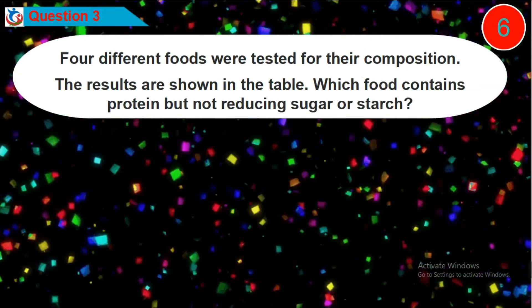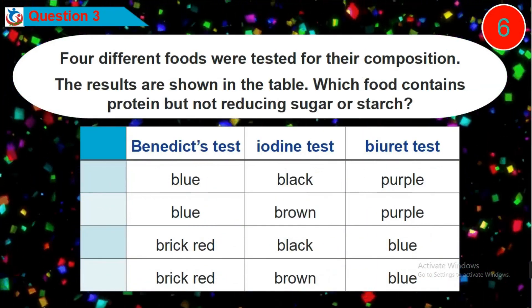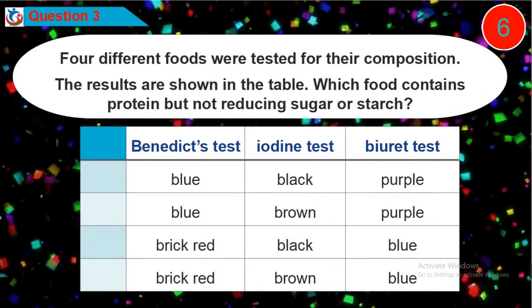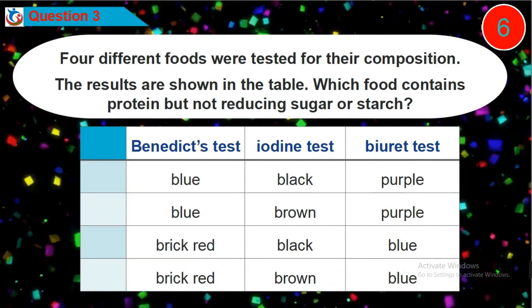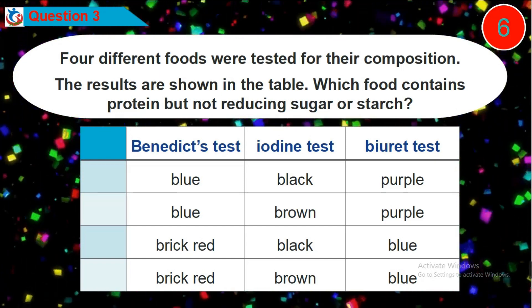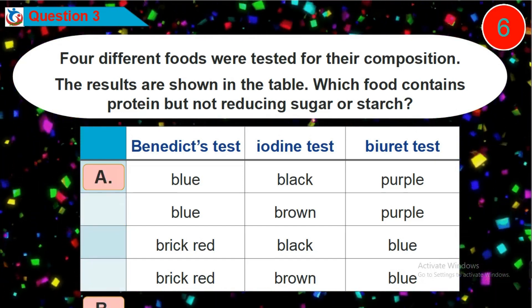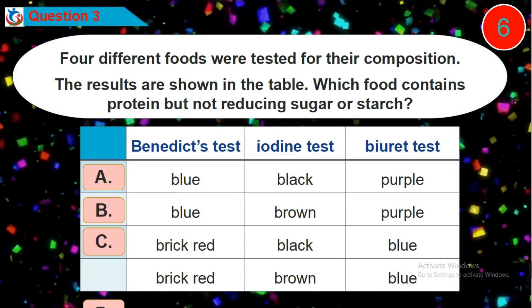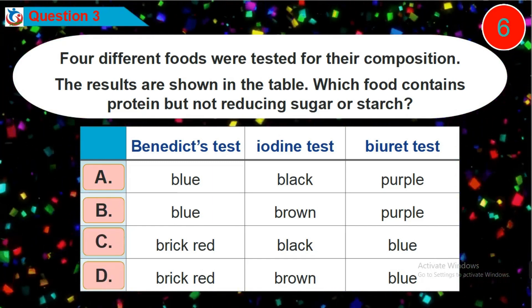Question 3. Four different foods were tested for their composition. The results are shown in the table. Which food contains protein but not reducing sugar or starch? Is it option A, B, C or D?